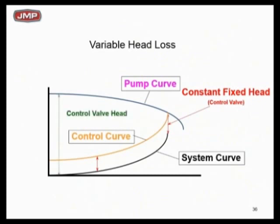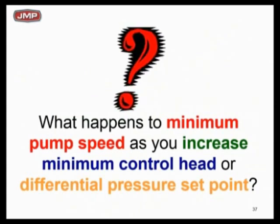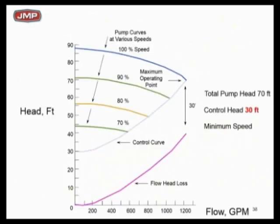That control head — that fixed head — is the one controlling the minimum speed of my pump at shutoff, and it controls efficiencies. We're misleading clients when we say a variable speed drive will fix anything. Here's the big question: what happens to the minimum pump speed as you increase the minimum control head, or that differential pressure setpoint? Let's plot it. I've got a pump selected for 70 feet of head. On this graph, a control head of 30 feet is shown, with the purple system curve — I need to add 30 feet to get the light blue control curve.